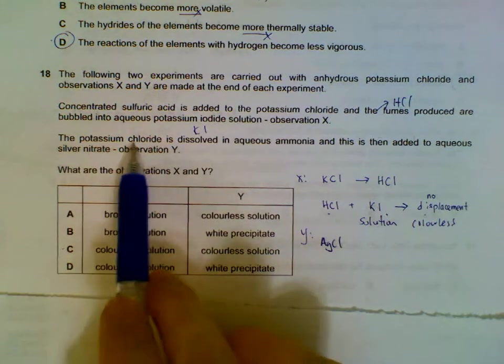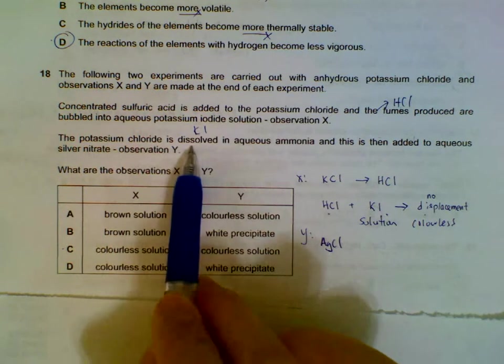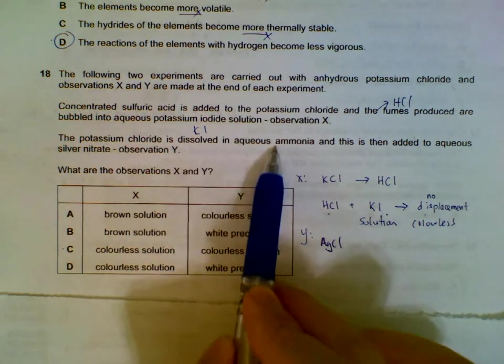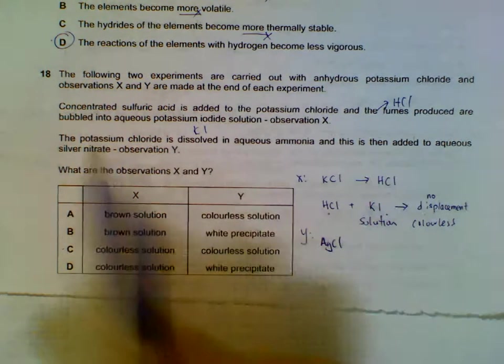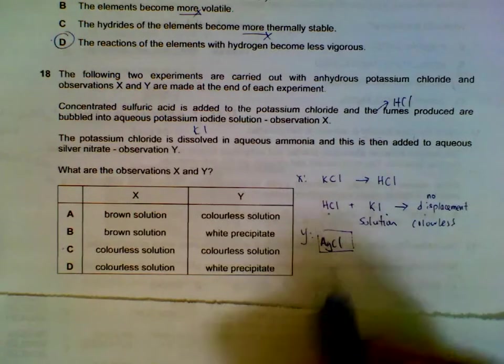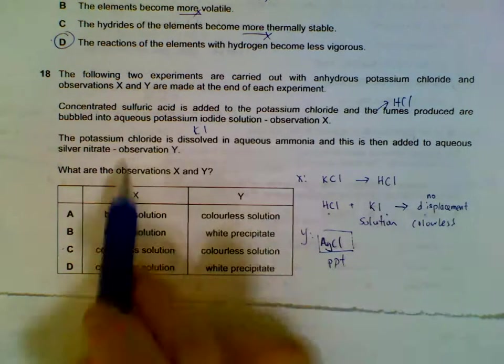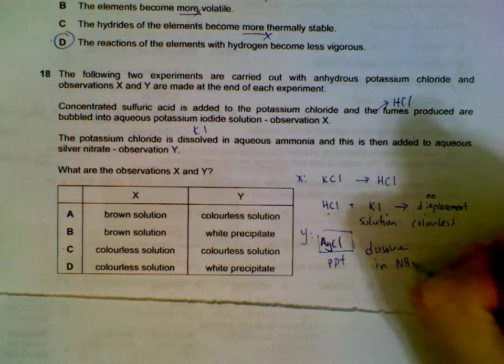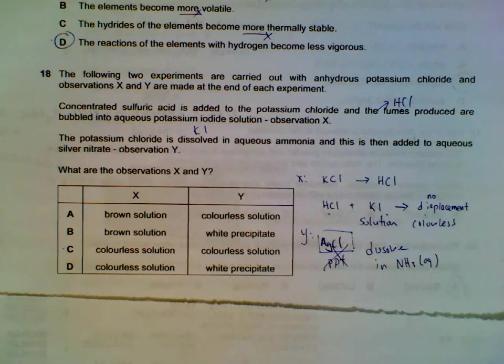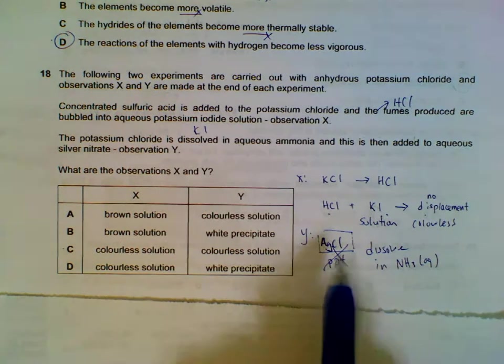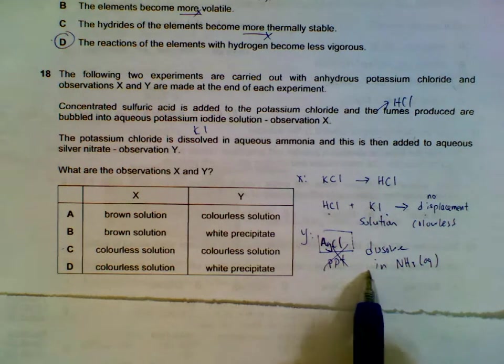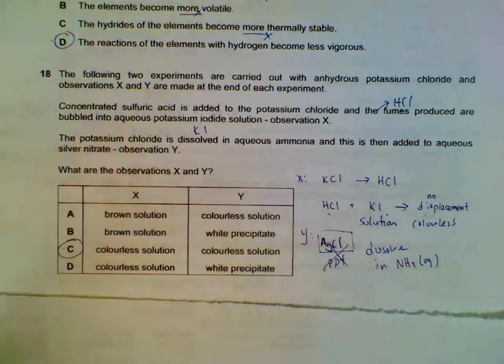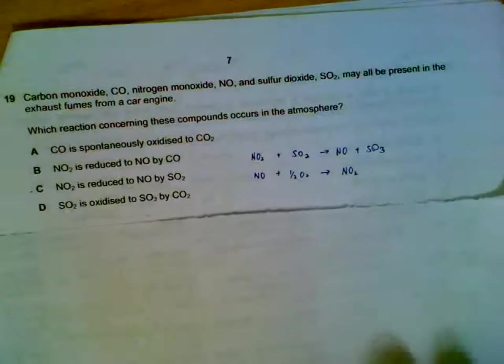The second experiment: potassium chloride dissolved in aqueous ammonia and then added to silver nitrate. Silver chloride might be formed which will be a precipitate, but in the presence of aqueous ammonia it will actually dissolve in aqueous ammonia, and we will not see the precipitate actually appearing at all. So again we will end up with a colorless solution. So for both experiments we have colorless solutions as a result.